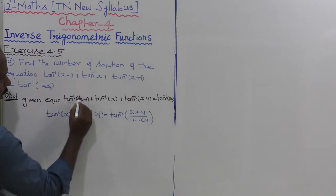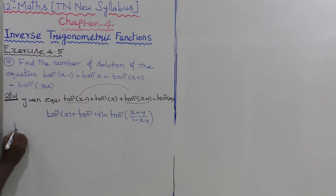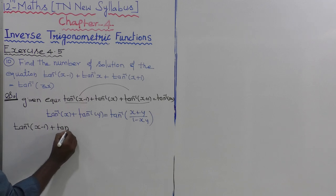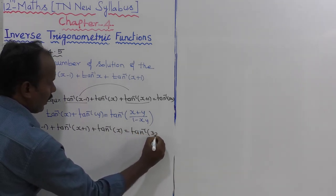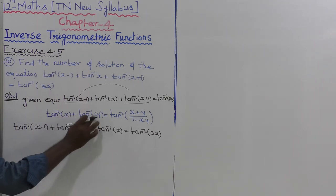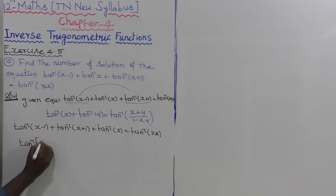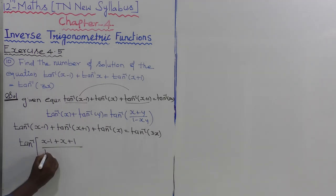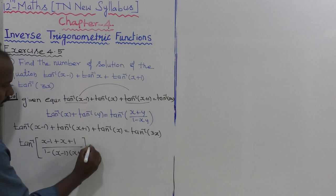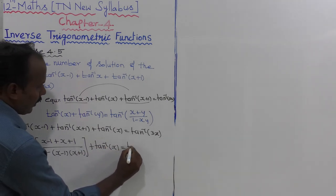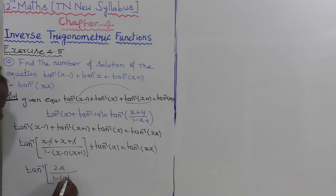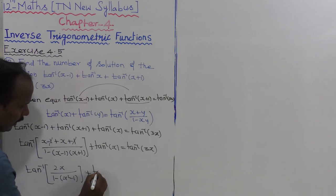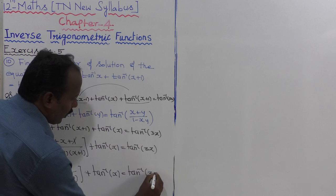Applying the formula to the first two terms: tan inverse of (x minus 1) plus tan inverse of (x plus 1), treating the first as x and second as y. This gives tan inverse of [(x minus 1 plus x plus 1) divided by (1 minus (x minus 1)(x plus 1))] plus tan inverse of x, equal to tan inverse of 3x. The minus 1 plus 1 cancels, giving tan inverse of [2x divided by (1 minus (x squared minus 1))] plus tan inverse of x equals tan inverse of 3x.